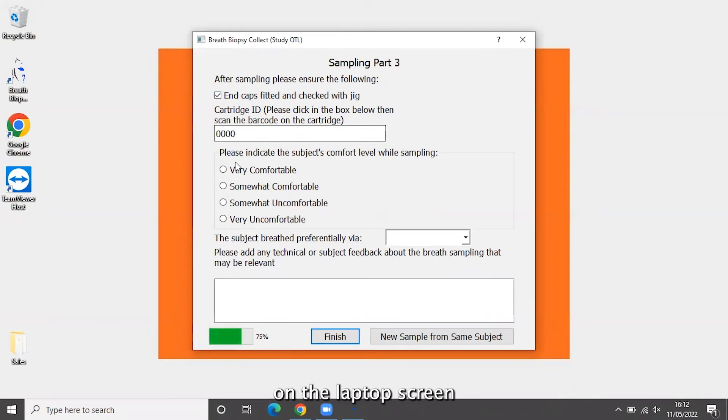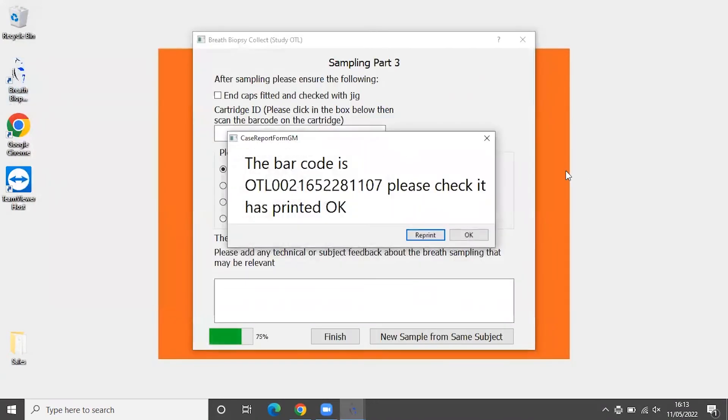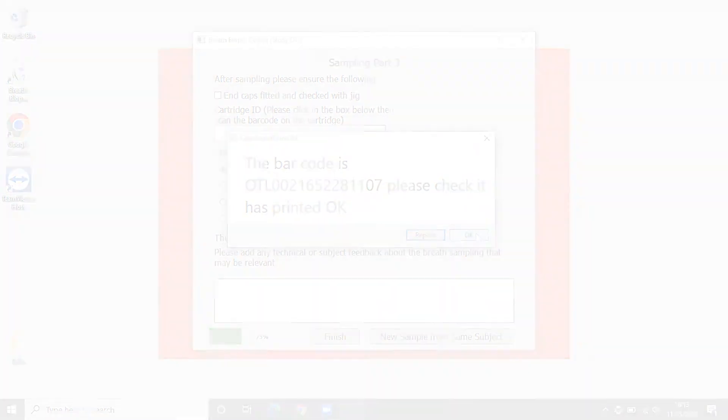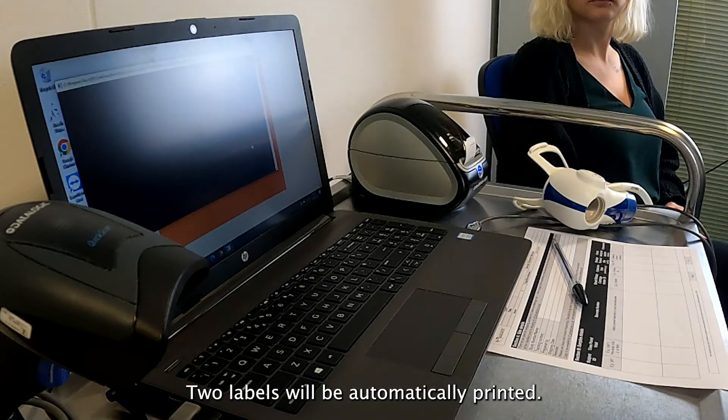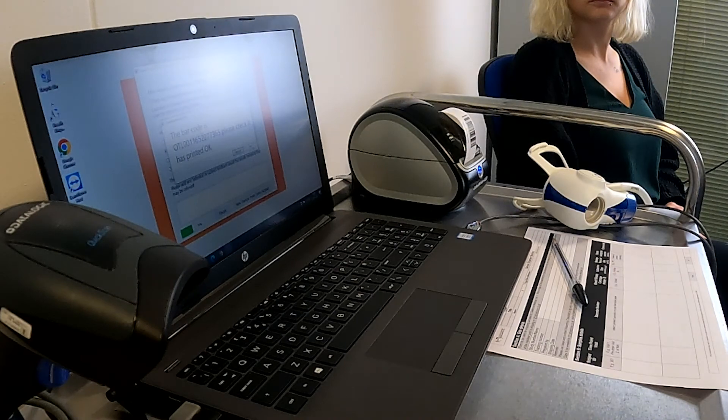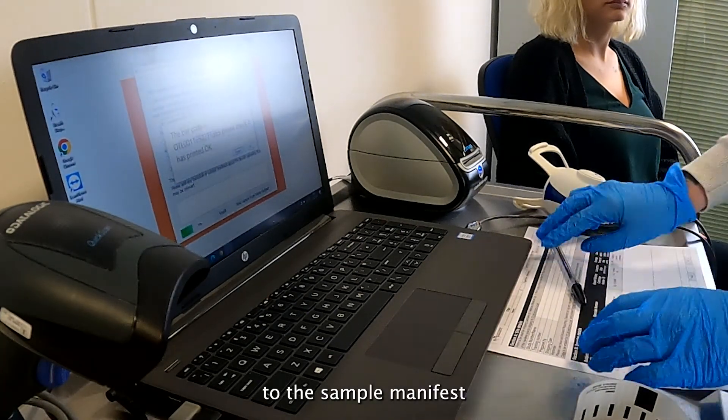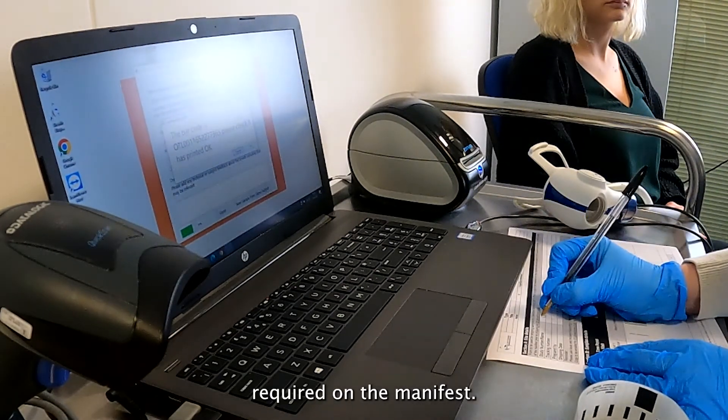Follow the instructions on the laptop screen and complete the data entry for the end of sampling. Two labels will be automatically printed. Attach the first label to the sample manifest and complete the information required on the manifest.